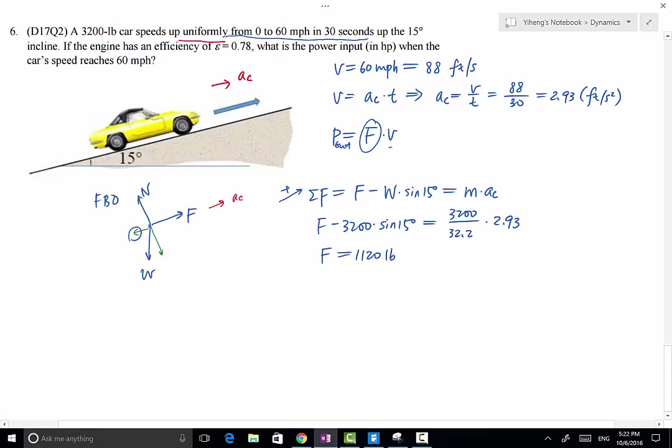And that's the force provided by the engine to pull the car up. From there, we can determine the output power of the engine, which is F times V, which is 1100 pounds times 88 foot per second. This equals 98,560 foot-pounds per second.